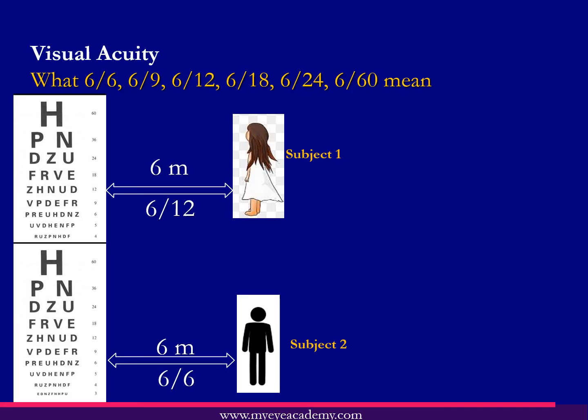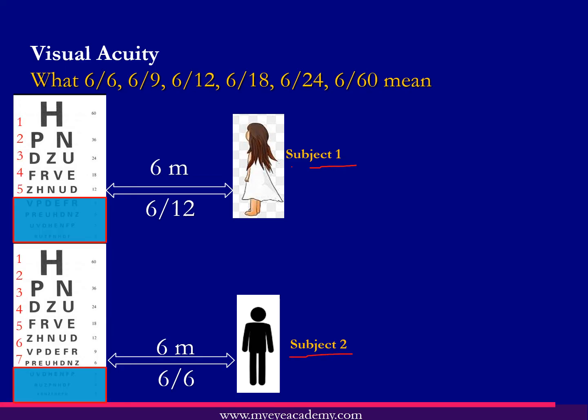Visual acuity, or form sense, is measured in numbers such as 6/6, 6/9, 6/12, and so on. We measure visual acuity with the help of the Snellen chart. In this slide we have two subjects: subject one can see five lines and is labeled to have visual acuity of 6/12, while subject two has visual acuity of 6/6.